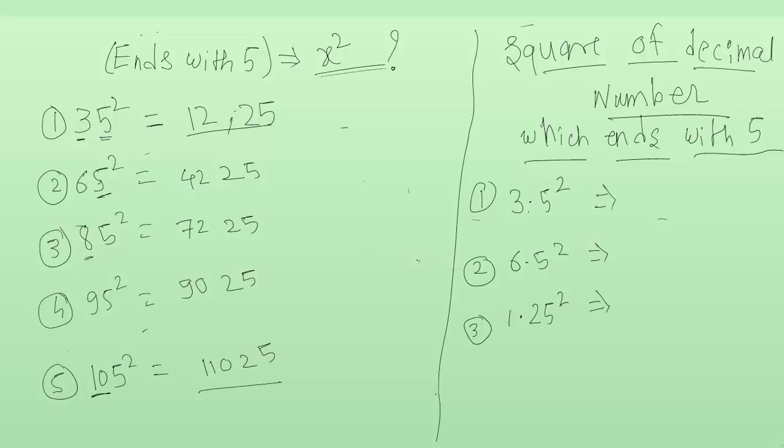Now we will learn how to find out the square of a decimal number which ends with 5. Look at example number 1: 3.5 square.